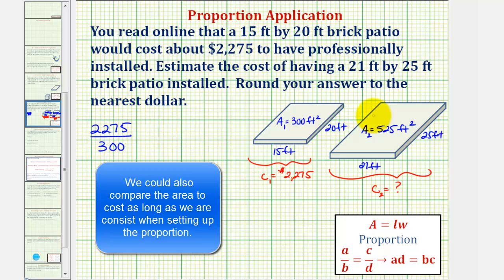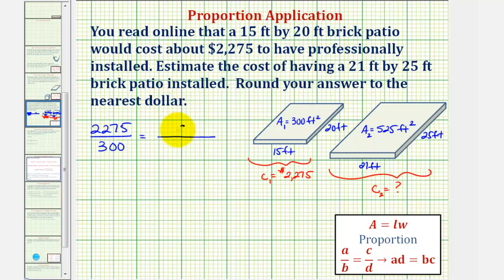So again we're comparing the cost to the area, and looking at the larger patio, this must be equal to the estimated cost of the larger patio which is unknown, we'll call that C, to the area of 525 square feet.